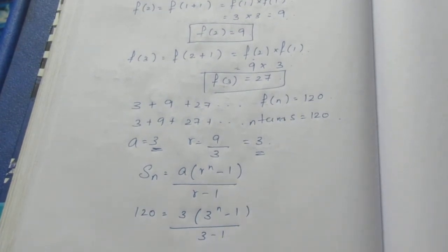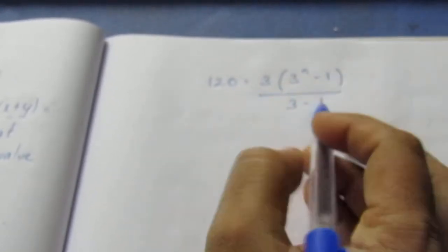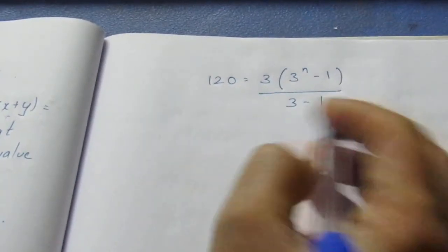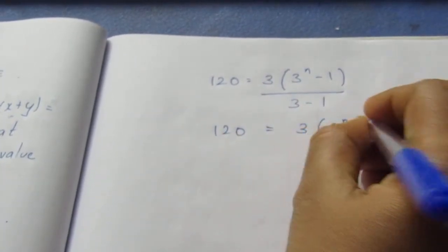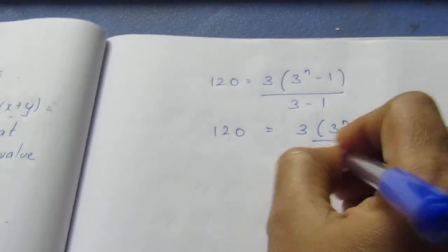If we subtract in the denominator, 3 minus 1 becomes 2. Let me rewrite: 120 equals 3 times (3^n minus 1) divided by 2.